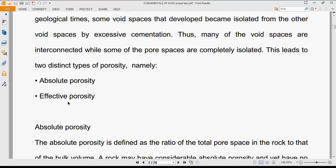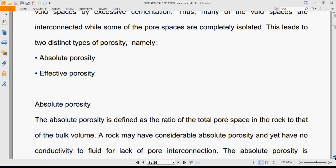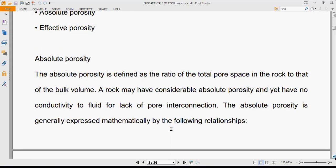Absolute porosity includes interconnected and non-interconnected pores, while effective porosity includes only interconnected pores. Absolute porosity is defined as the ratio of total pore space in the rock to the bulk volume.